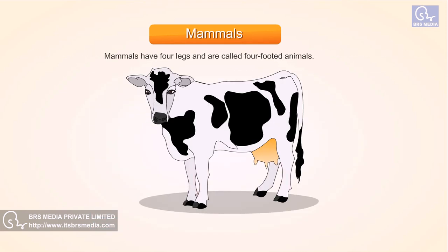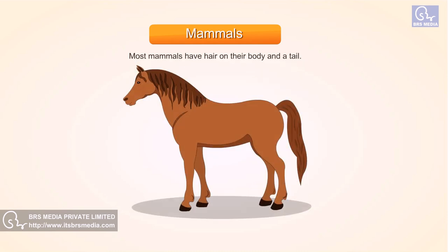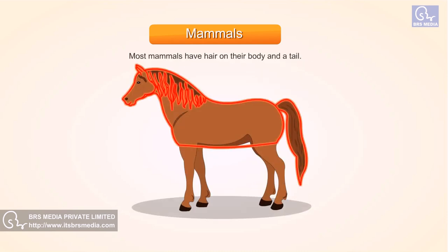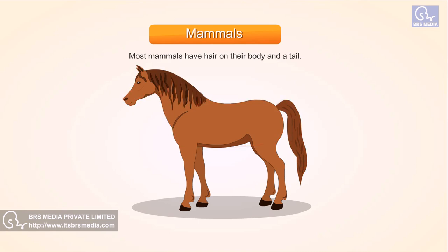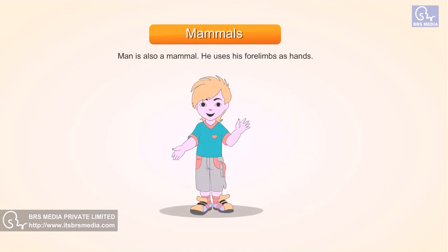Mammals have four legs and are also called four-footed animals. Most mammals have hair on their body and a tail. Man is also a mammal — he uses his forelimbs as hands.